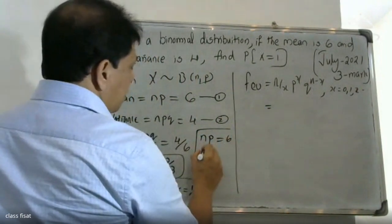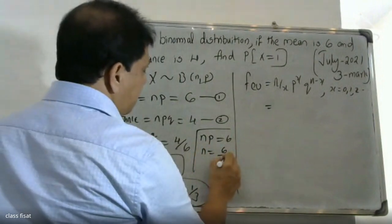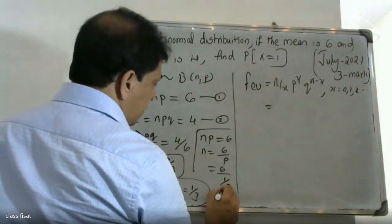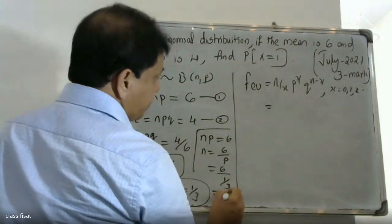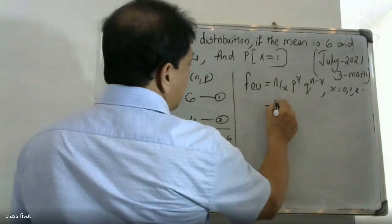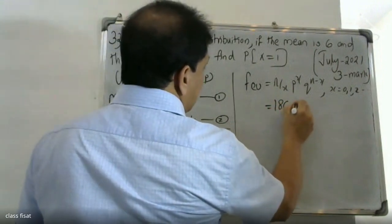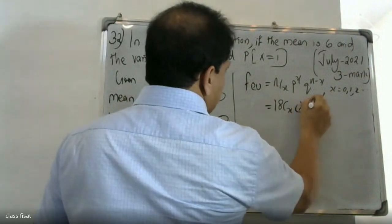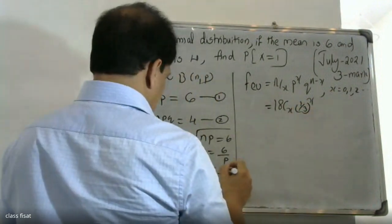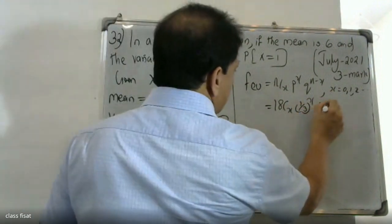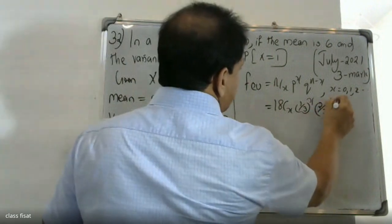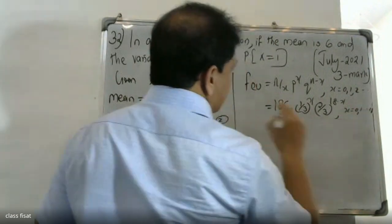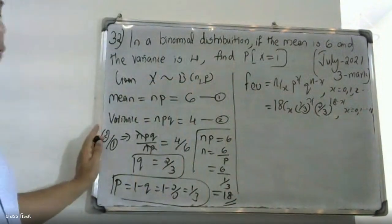For our distribution, since np = 6 and p = 1/3, we get n = 18. Therefore, P(X=x) = 18Cx × (1/3)^x × (2/3)^(18-x) for x = 0, 1, 2, ..., 18.